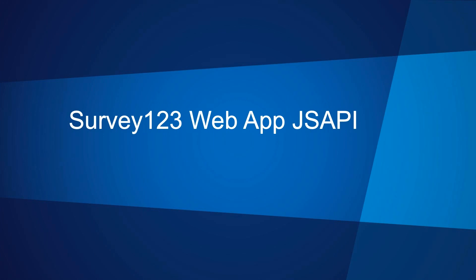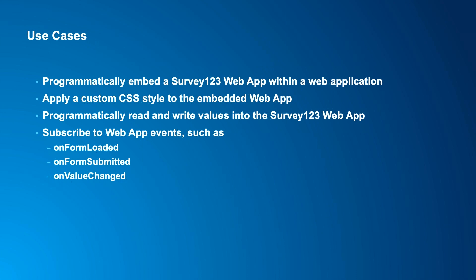Let's focus on the Web App JS API. The Survey123 Web App JS API allows us to embed a Survey123 web form inside another web application that you author — taking your application and integrating a survey form so that the logic of your application drives the lifecycle of that form. Use cases include applying custom CSS styling, being able to interact with data as a user enters it, having your application add data into the form, and having your application respond to various events during a form's lifecycle.